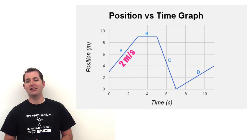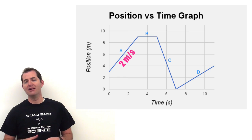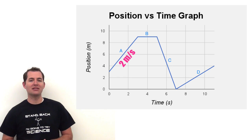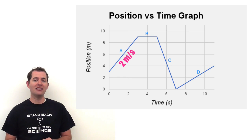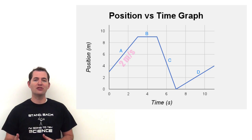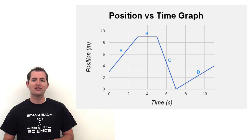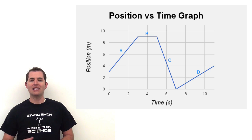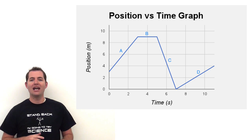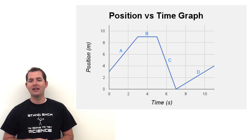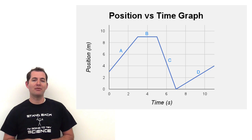The slope of section A is also the velocity of the object at this time — it was moving at two meters per second. That means every second the object moved another two meters. At zero seconds the object was at three meters; after one second it would be at five meters; after two seconds at seven meters; and after three seconds at nine meters. We can see that this matches up with what we see on our position versus time graph.